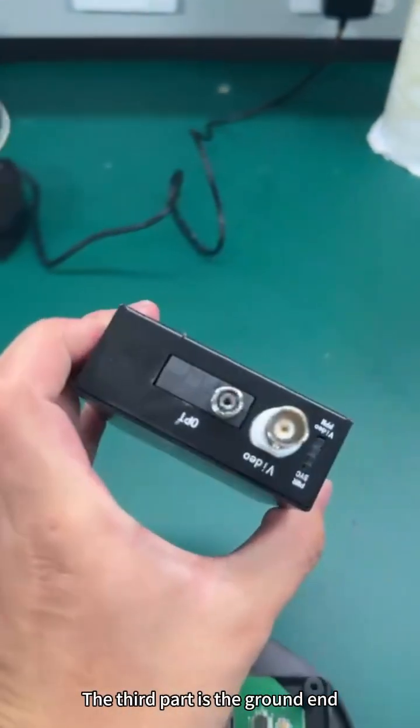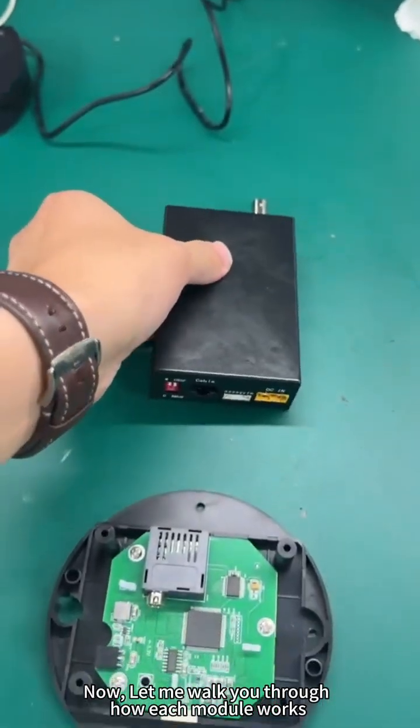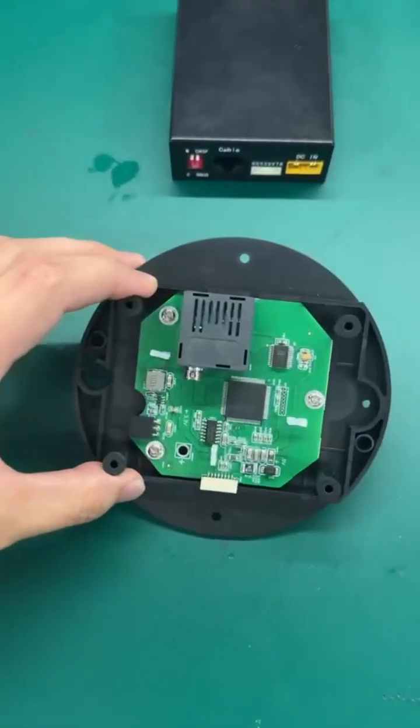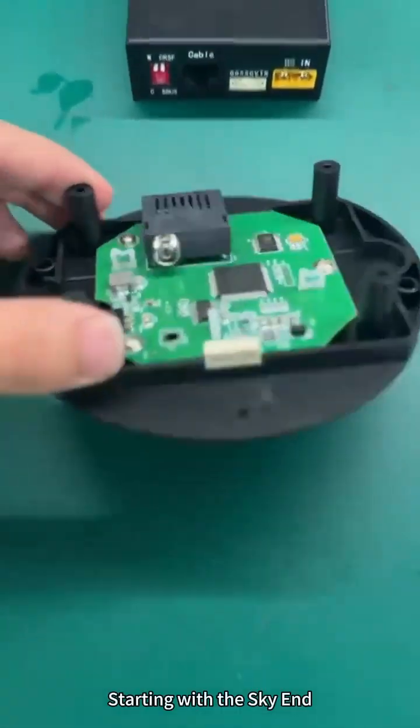The third part is the ground end. Now let me walk you through how each module works, starting with the sky end.